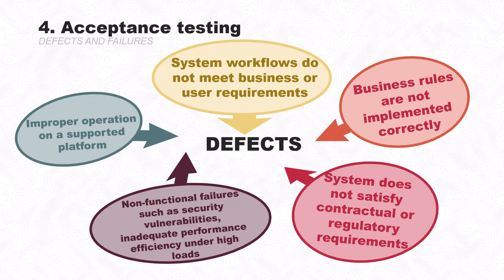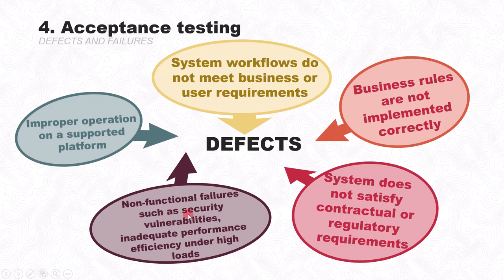Since the complete system is available and tested from the user's point of view, we can check for non-functional failures such as security vulnerabilities and inadequate performance efficiency under high loads. The last defect is improper operation on a supported platform — the developed system is tested on the supported platform to verify it still works correctly. These are the five defect categories found during acceptance testing.